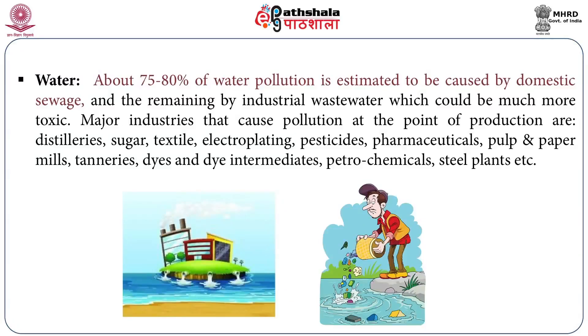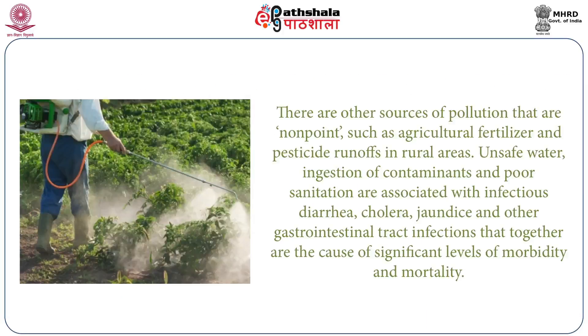The report identifies specific household, workplace, outdoor and indoor factors that play an important role in determining human health. The first of these is water. About 75-80% of water pollution is estimated to be caused by domestic sewage and the remaining by industrial waste water, which could be much more toxic. Major industries that cause pollution at the point of production are distilleries, sugar, textile, electroplating, pesticides, pharmaceuticals, pulp and paper mills, tanneries, dyes and dye intermediates, petrochemicals and steel plants. There are other sources of pollution that are non-point such as agricultural fertilizer and pesticide runoffs in rural areas.